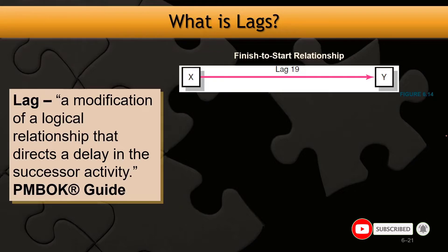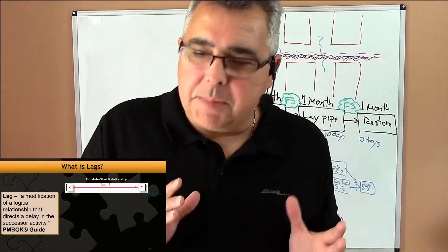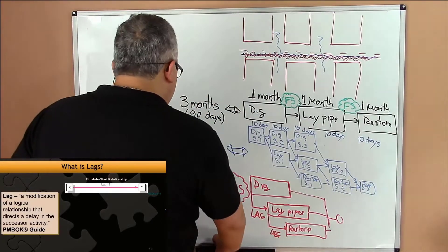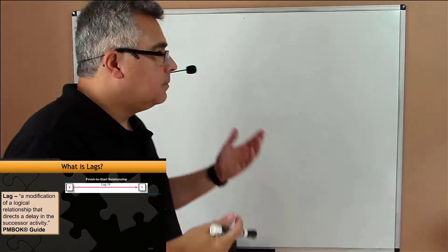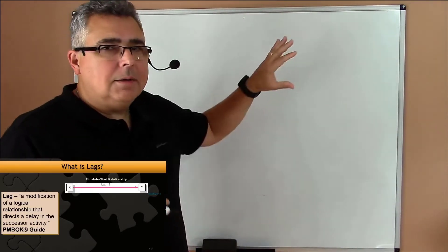What does it mean to apply lags when you modify the relationship between two activities? Let's take that as an example. Suppose that we have... I'm just representing a section of a bigger project network.